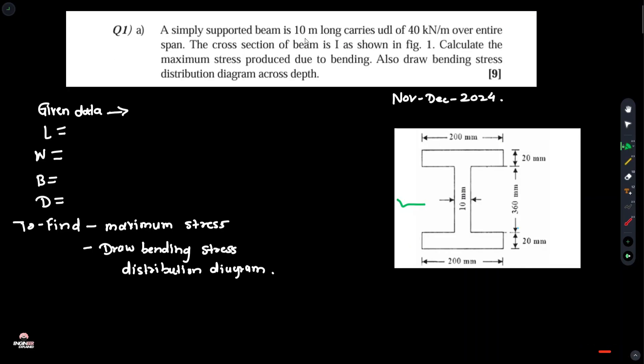First, a simply supported beam is 10 meters long. It carries a uniformly distributed load (UDL) of 40 kilonewtons per meter over the entire span.